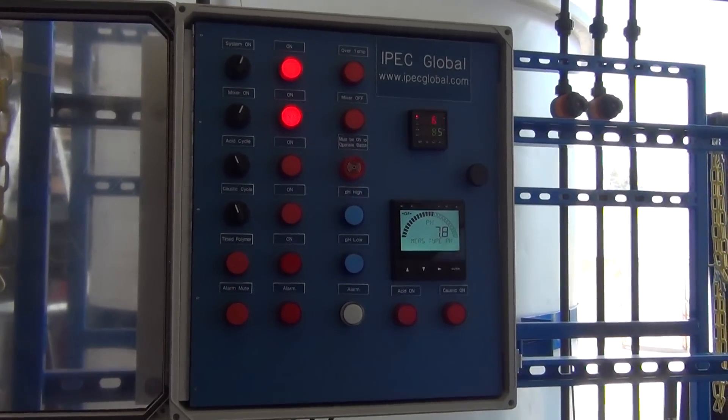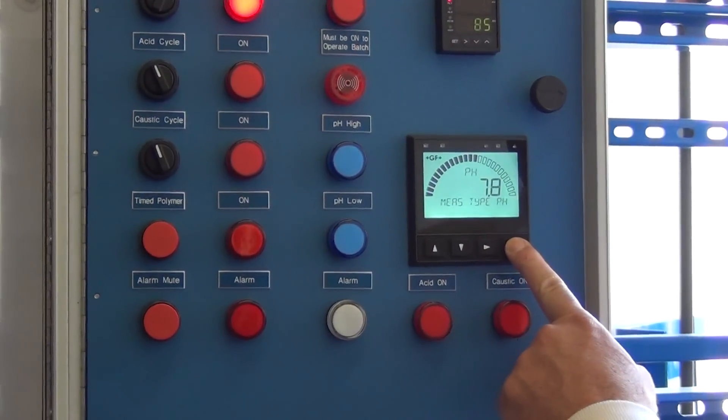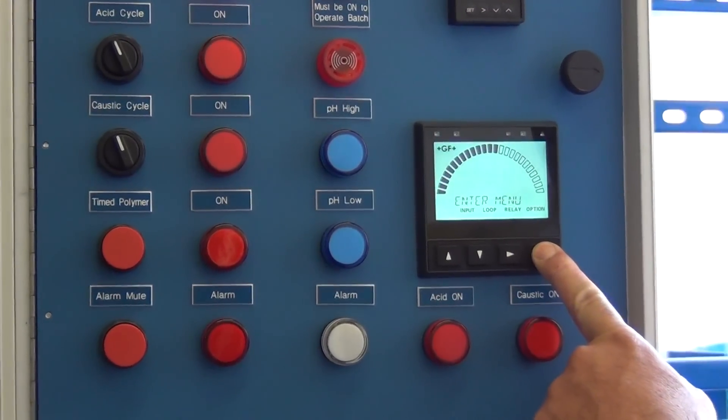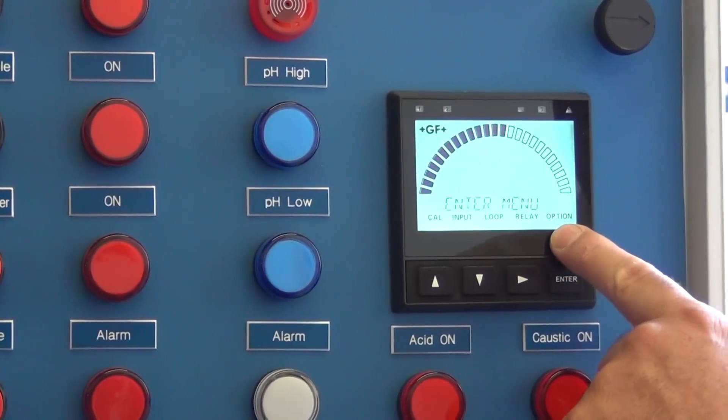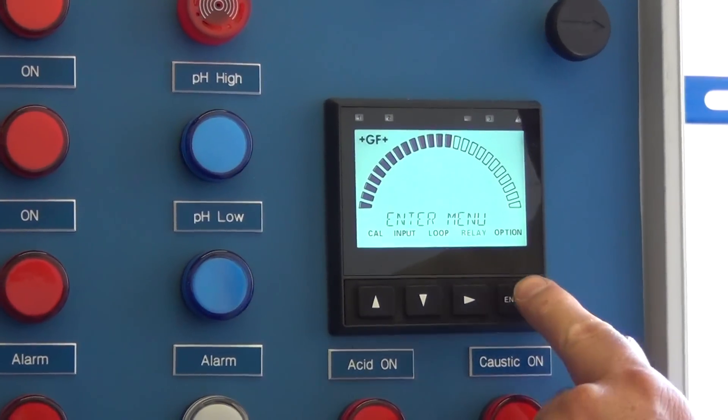To change the value of the caustic pump, if you're at the main menu, you want to press and hold enter for a couple of seconds. You need to go to the relay menu and then hit enter.